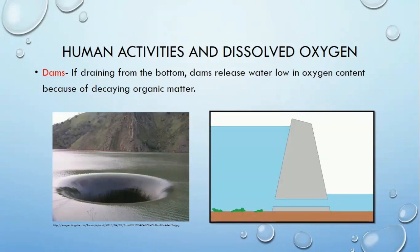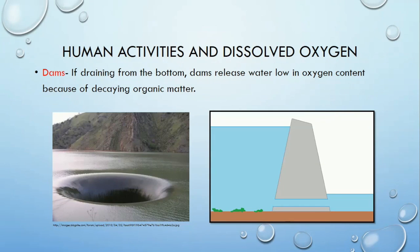Dams are man-made structures that help divert waters to different areas. Water at the bottom of dam reservoirs tends to collect decaying organic matter, which causes the water at the bottom to be low in dissolved oxygen. Some dams drain from the bottom, like you see in the right picture, which releases oxygen-poor water into the next reservoir.